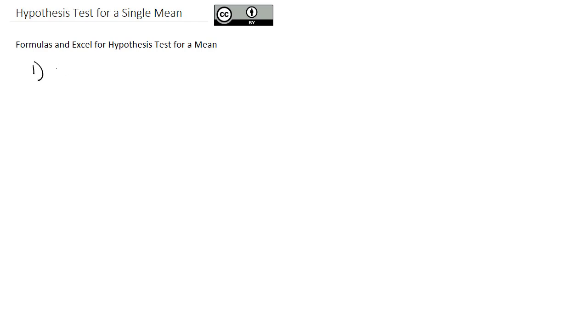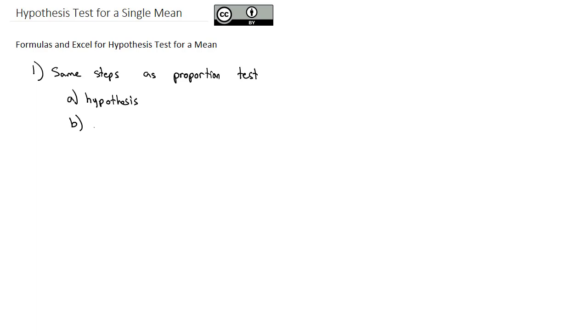Our next step in our journey through inferential statistics is to conduct a hypothesis test for a single mean. We've done hypothesis tests before when working with proportions, and the steps are the same. We first define the hypothesis — we'll have a claim about a mean, stating that mu, the population mean, is equal to some claimed value, and we try to disprove it with an alternate hypothesis. Based on that alternate hypothesis, we draw a picture to make sure we're in the right tail.